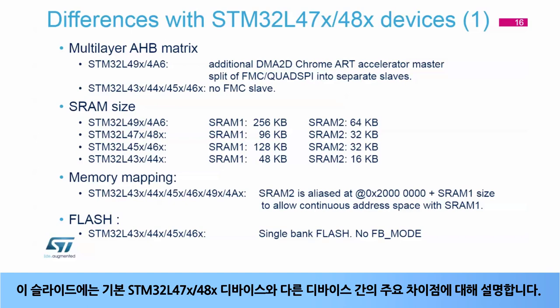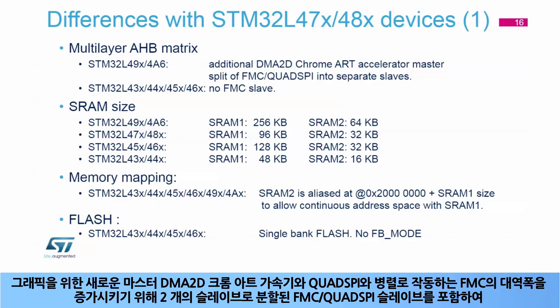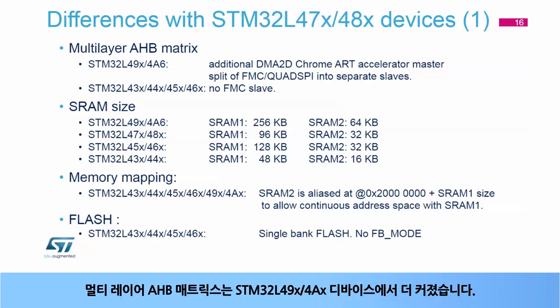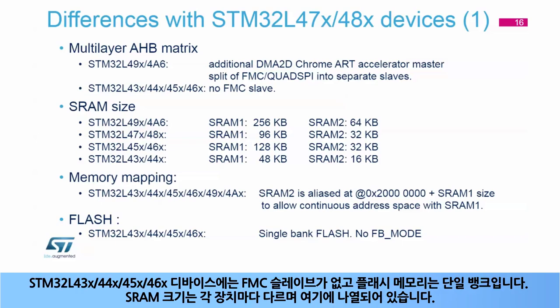This slide presents the key differences between the baseline STM32L47X/48X devices and other devices. The multi-layer AHB matrix is bigger for STM32L49X/4AX devices, including a new DMA2D Chrom-ART accelerator for graphics, and splitting the FMC/Quad SPI slave into two separate slaves to increase bandwidth when FMC works in parallel with Quad SPI. On STM32L43X, 44X, 45X, and 46X devices, there is no FMC slave and the flash memory is single bank. The SRAM sizes are different for each device and are listed here.